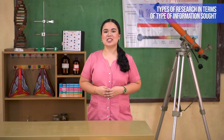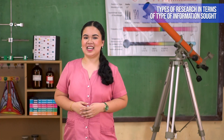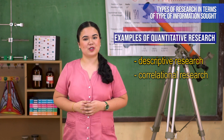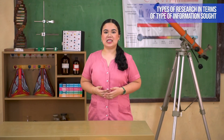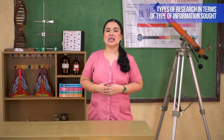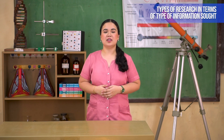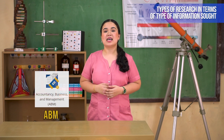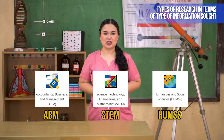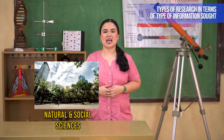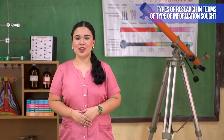Quantitative research is concerned with numbers and their relationship with events. Descriptive research and correlational research are some examples of quantitative research. Quantitative research has proven its importance not only in the teaching profession but also in different academic strands like ABM, STEM, and UMS. Likewise, this type of research is important in natural and social sciences, behavioral and health sciences.